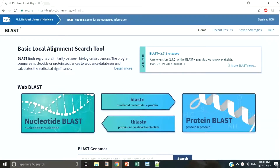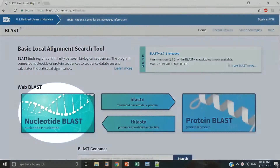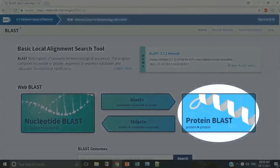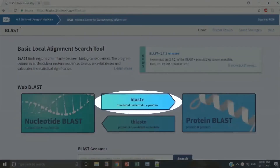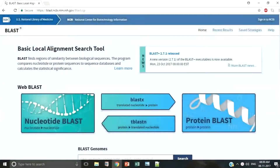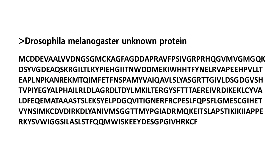This is the web interface of BLAST. There are four different types of BLASTs: nucleotide BLAST, protein BLAST, translated nucleotide to protein BLAST, and protein to translated nucleotide BLAST. Here, we have a protein sequence and we want to identify the respective homologous genes, so we shall perform TBLASTN — that is, we compare the sequence against a known nucleotide database.